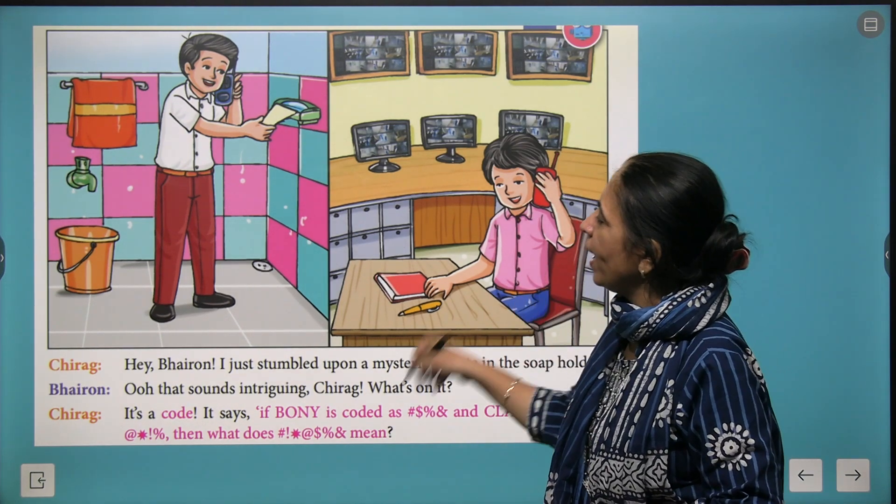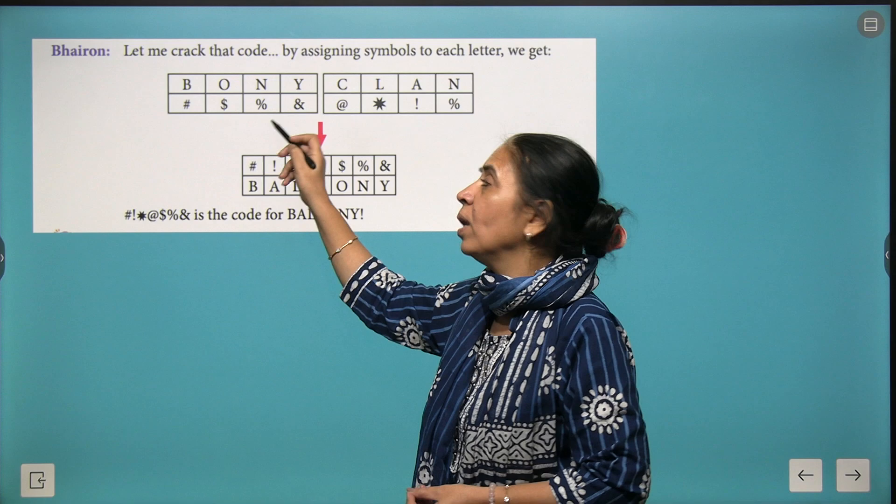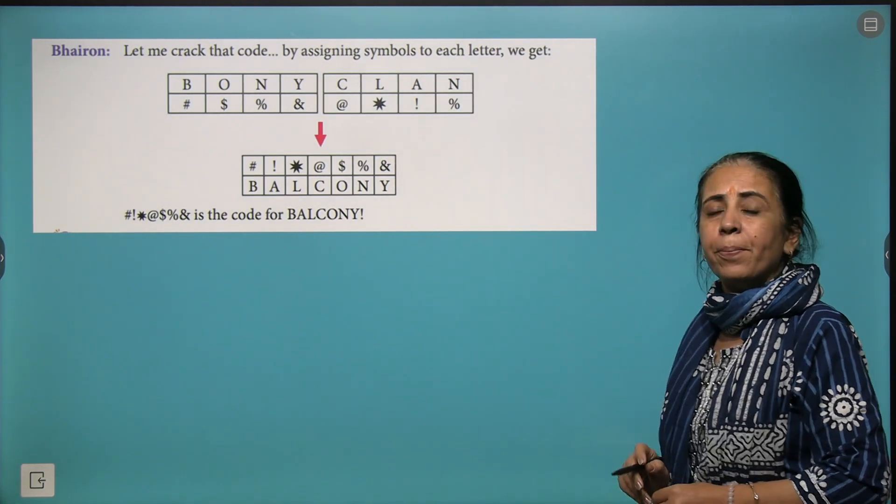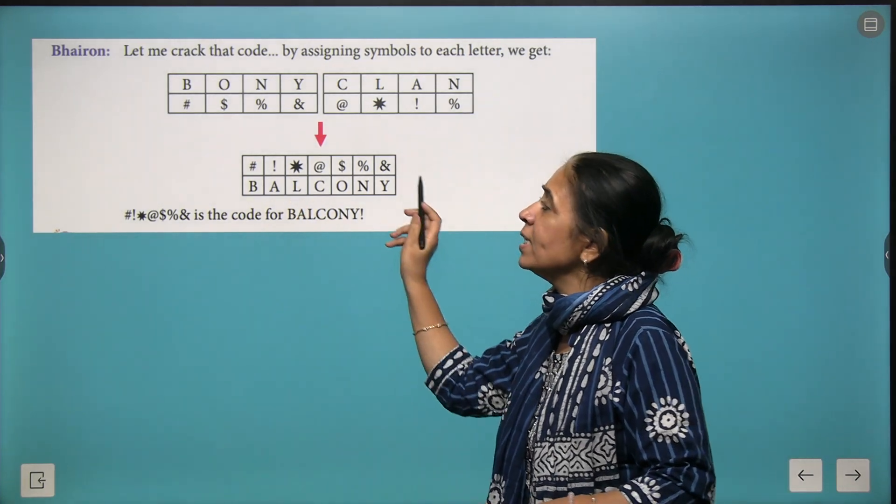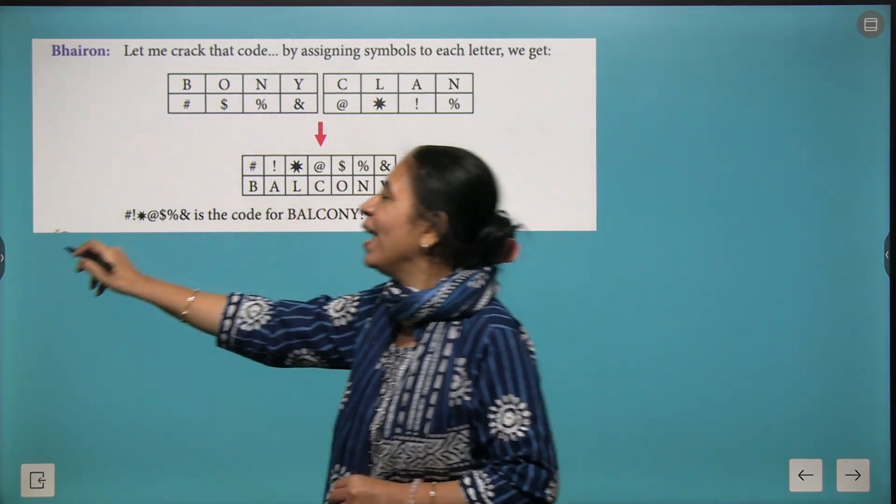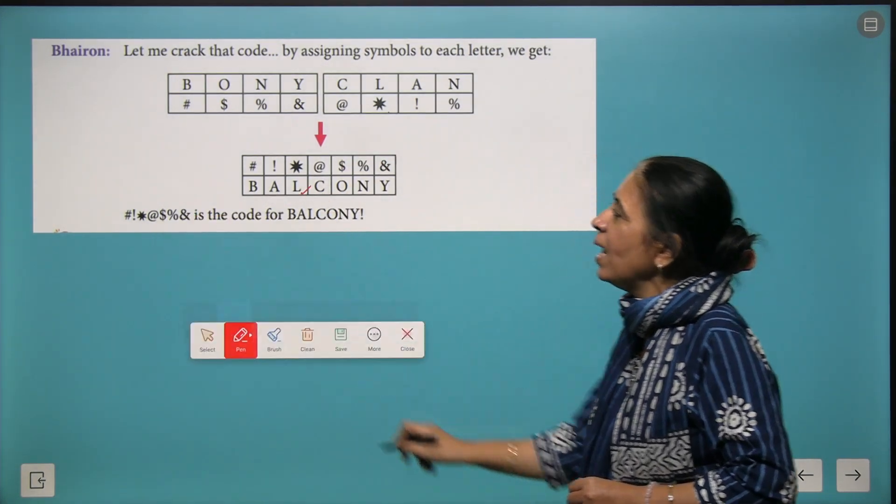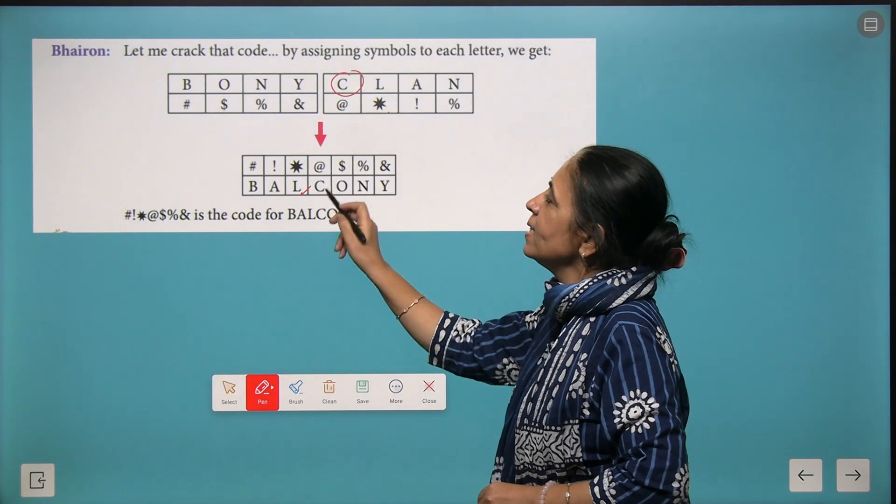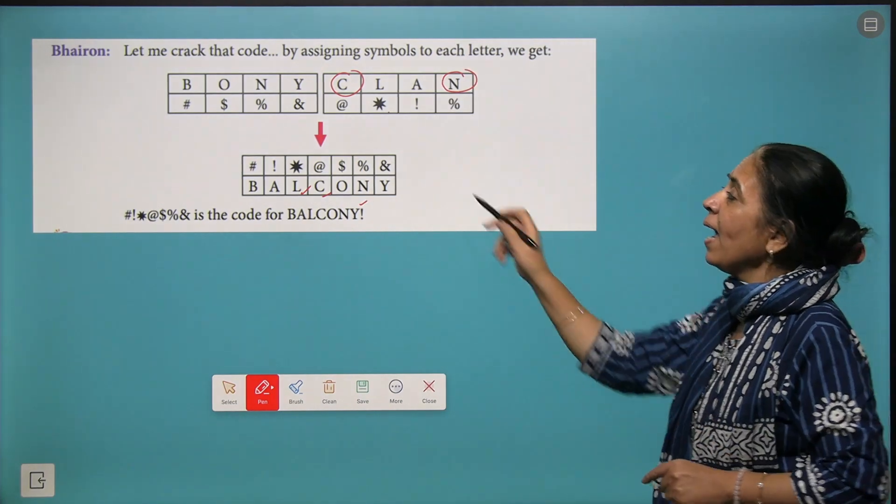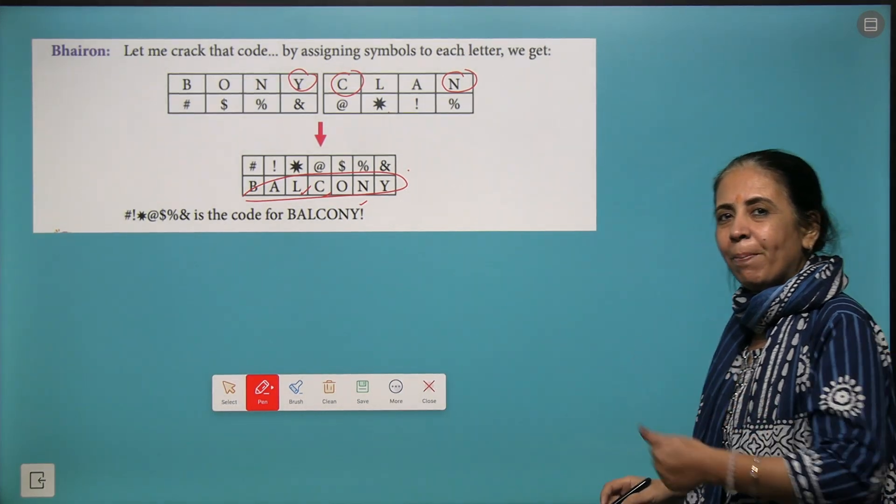See what interesting way he is using. He says that BONY is represented by #$%& and CLAN is written by &*!%. Now they have to decode this message: #!&*%. The hashtag stands for B, exclamation is L, asterisk is L, at sign is C, percent is N, and & is Y. We got the code - the next treasure is in BALCONY.